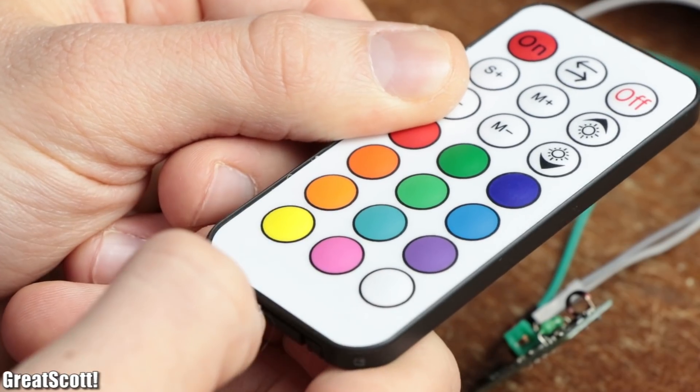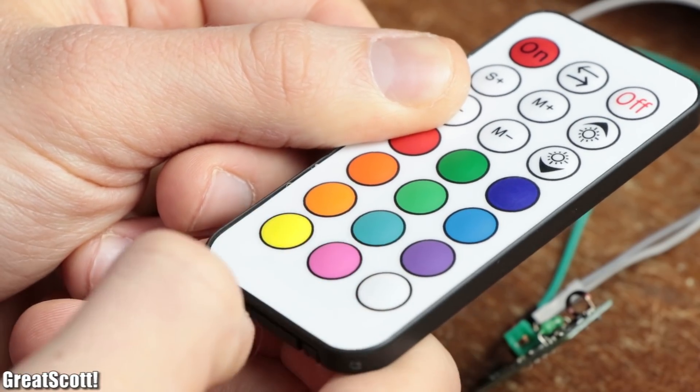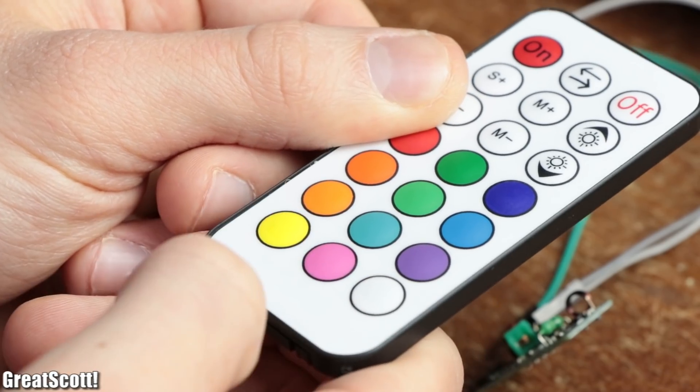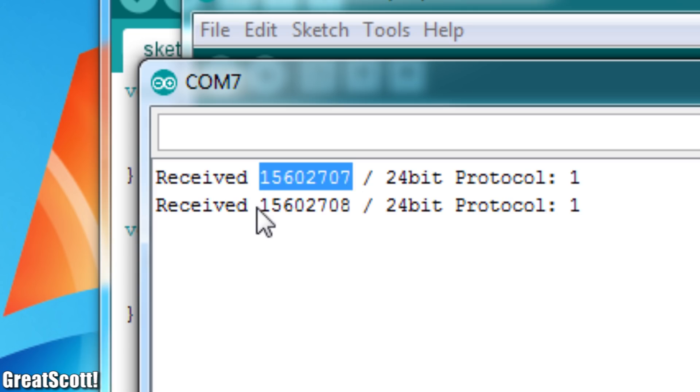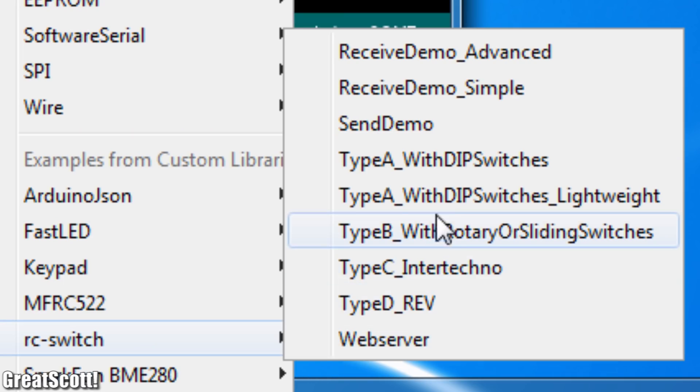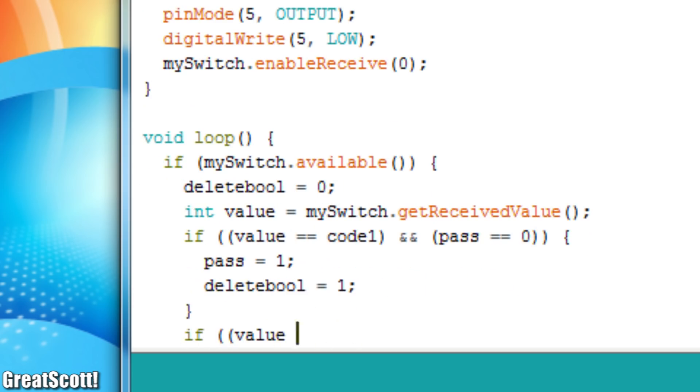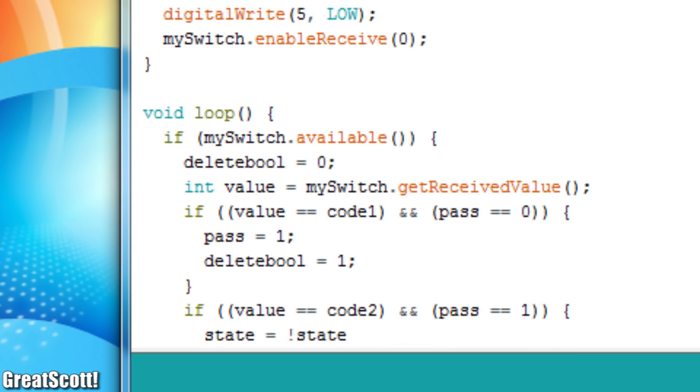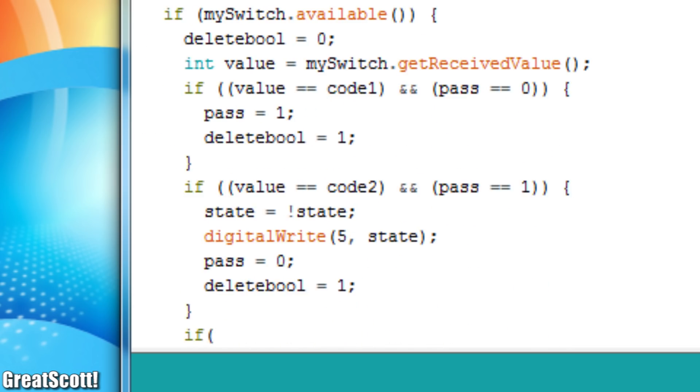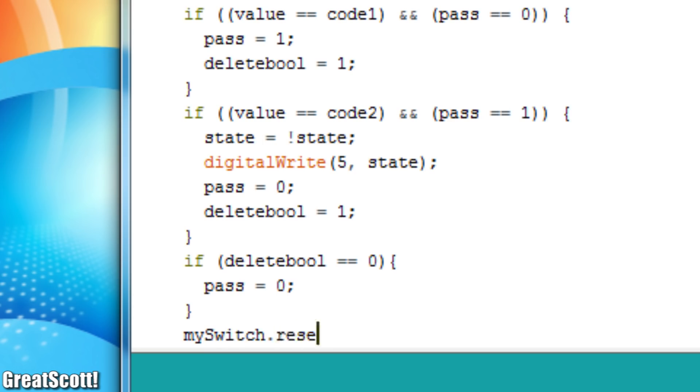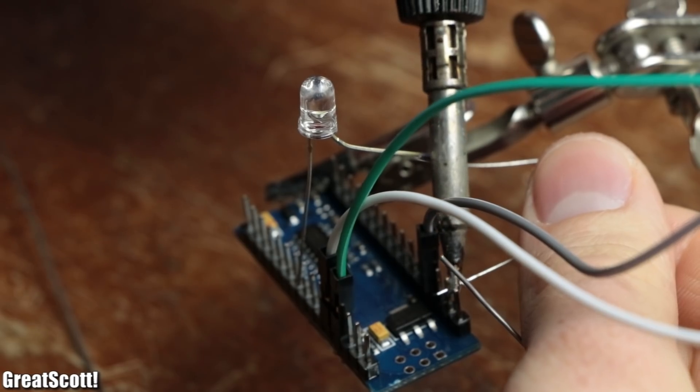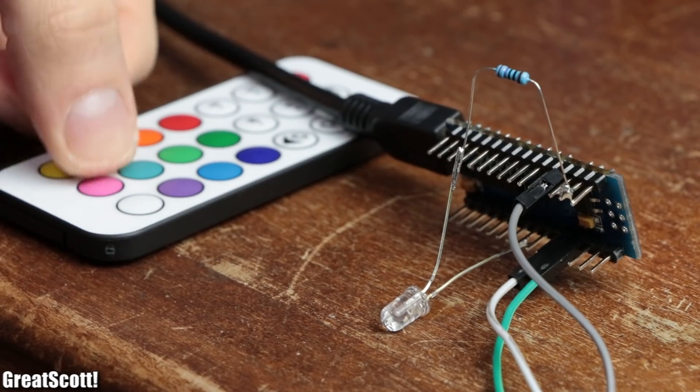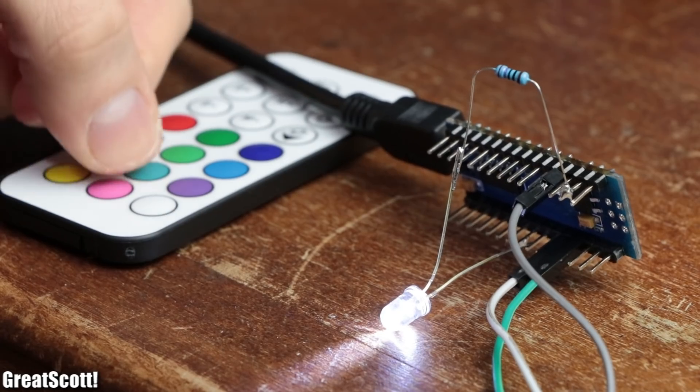Now my secret codes for turning off/on the GU10 LED spots will be pressing yellow and pink one after the other. So I got the decimal codes of those buttons from the serial monitor by using the simple receive demo sketch and created a simple piece of code around them which reverses the current state of digital pin 5 of the Arduino whenever this button combination was pushed. After uploading the new code I hooked up an LED to pin 5 for testing and checked whether everything worked how I wanted it to which it did.